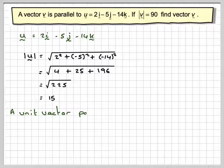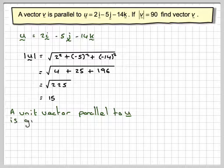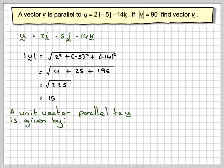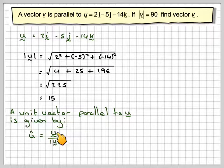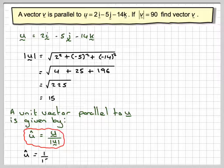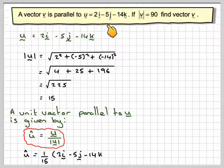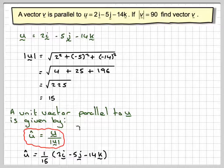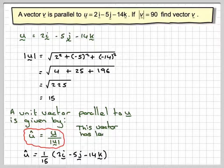Now if we want a unit vector parallel to U, it will be given by the vector U divided by its magnitude. So it will be 1/15th times that, that will ensure that this vector here has length of 1 unit.